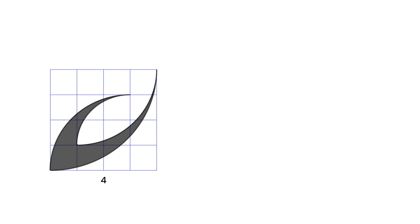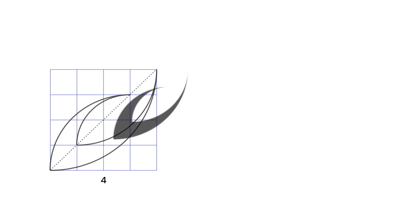What's the area of the gray shaded region? Let's connect the diagonal of the square. Obviously, the gray area can be divided into two parts.